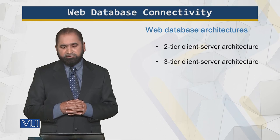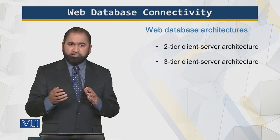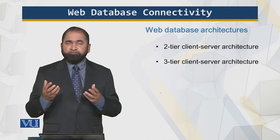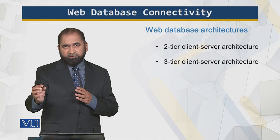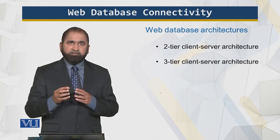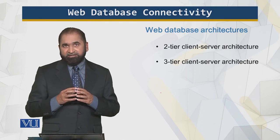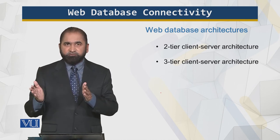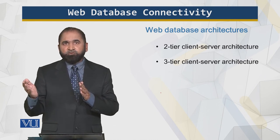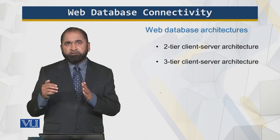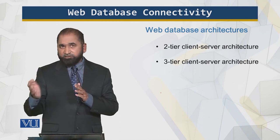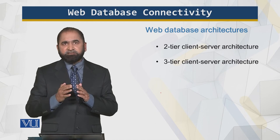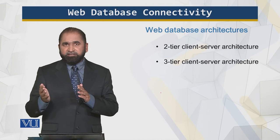Web-based database architectures consist of the two-tier and three-tier client-server architectures. In a two-tier architecture, we have what used to be called the dumb terminal, or a PC that connects directly to a server. Part of the application runs on the client and the main part runs on the server with nothing in between. The client makes a request — for example, to know the status of customer transactions — the server has the database running and returns the results.